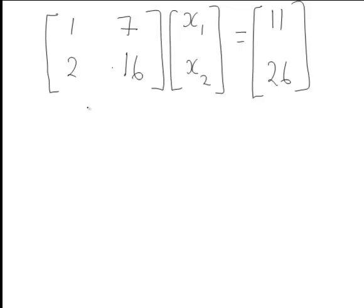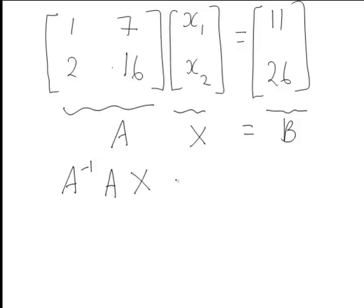And we can see this is now in the required form Ax equal to b where we're wanting to solve for the matrix of unknowns x. And to see how to do this we could start by pre-multiplying both sides of this equation by A inverse.